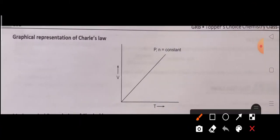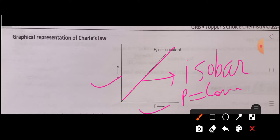When you plot the graph between V and T, the absolute temperature, you will obtain a straight line. This straight line is known as an isobar because P is constant. That's why this graph is known as an isobar.